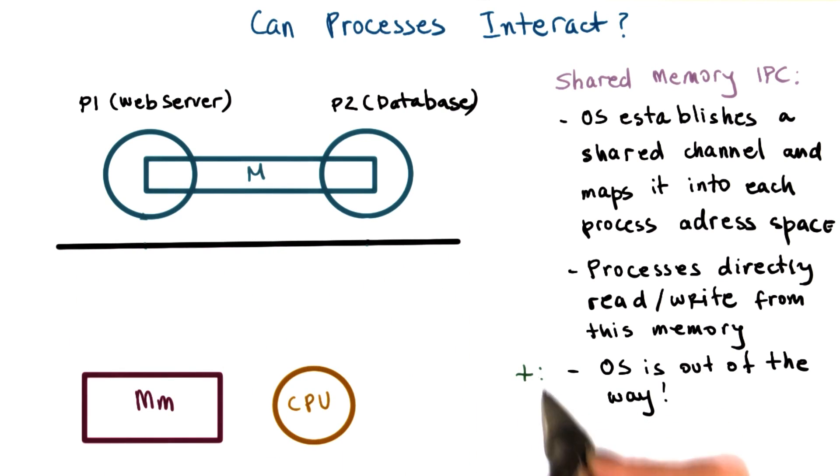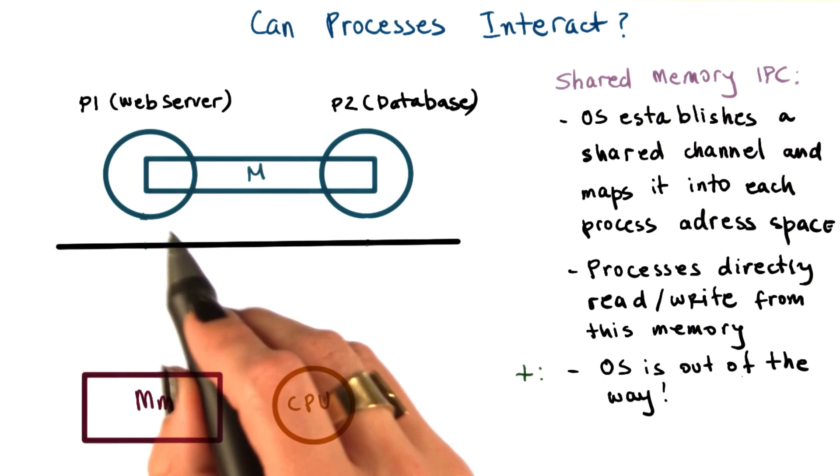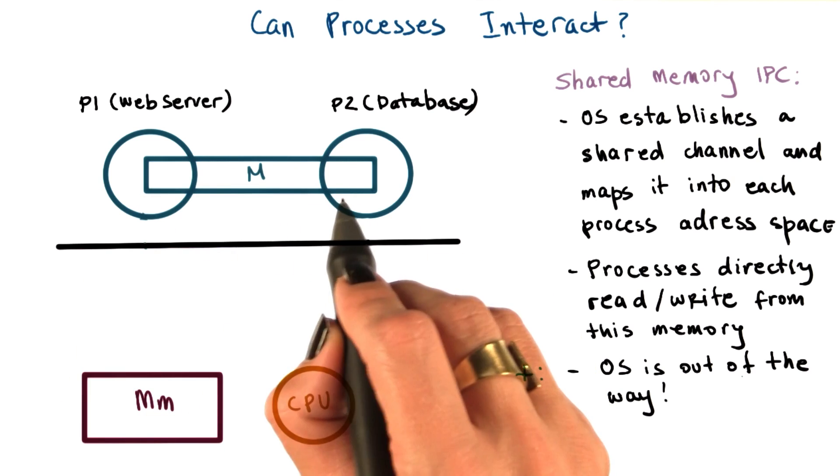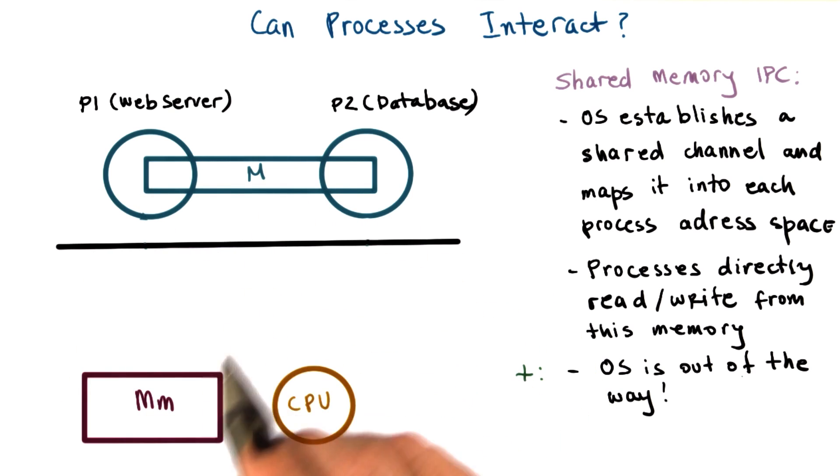That, in fact, is the main advantage of this type of IPC, that the operating system is not in the fast path of the communication. So the processes, while they're communicating, are not going to incur any kind of overheads from the operating system.